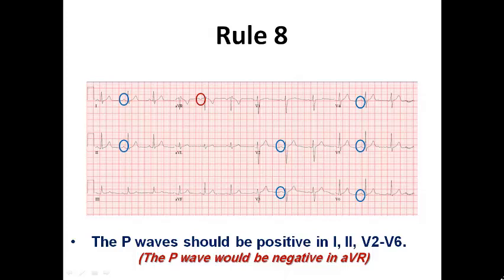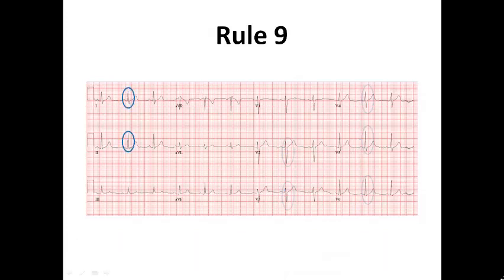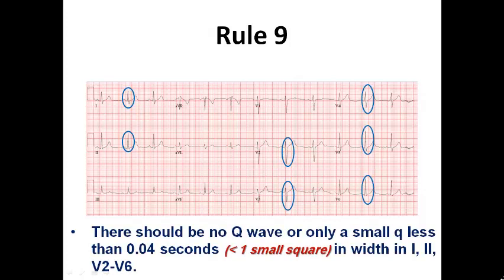Rule number nine mentions that there should be no Q-wave, or only a small Q-wave less than 0.04 seconds — that is, less than one small square in duration — in lead one, lead two, and from V2 to V6. You can find initial Q-waves especially in V5, V6, lead one, and AVL sometimes, as these are the lateral ECG leads.